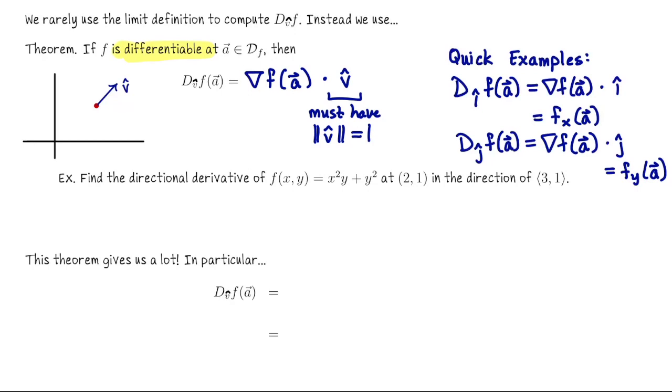For a different sort of example, let's find the directional derivative of f(x,y) = x²y + y² at the point (2,1) in the direction of (3,1). So here (2,1) is playing the role of a and (3,1) is not v, but we'll take that vector and divide it by its own magnitude in order to compute the appropriate unit length vector v. So v will be (3/√10, 1/√10). We need v, and we also need the gradient of f at this point.